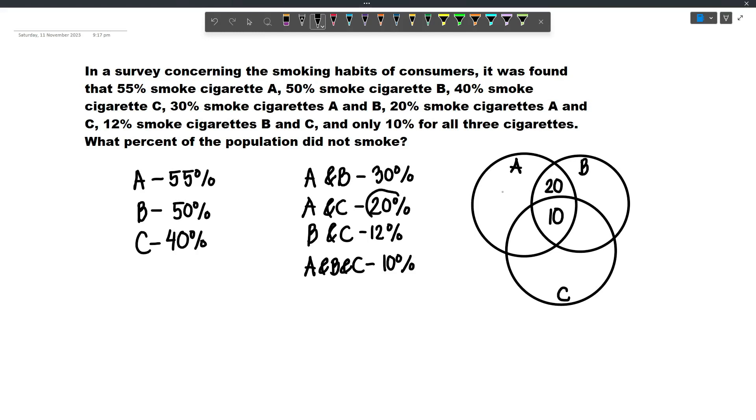Next, 20% of the population smokes A and C, and so 20 minus 10, that will be 10. Now again, this is 20 because this involves A and B, and then this is 10 because it involves A and C.